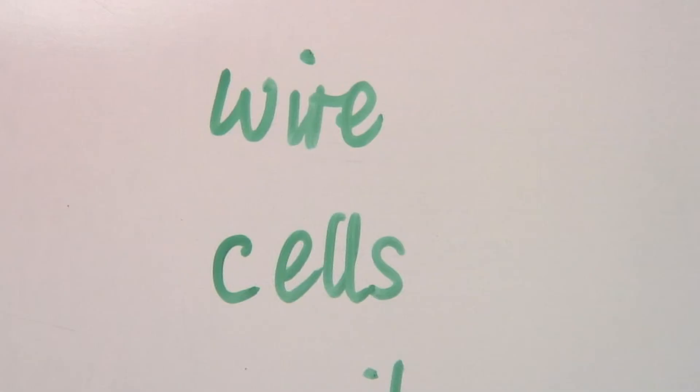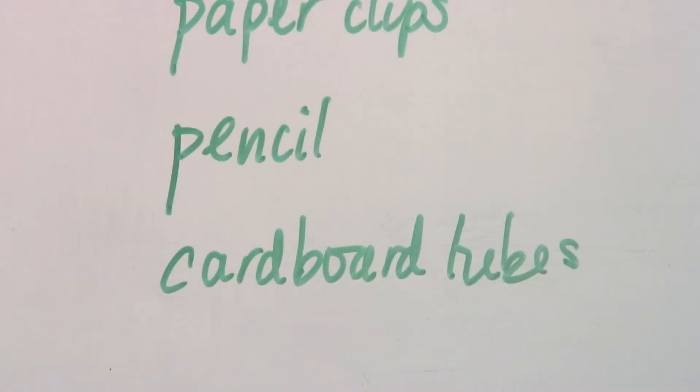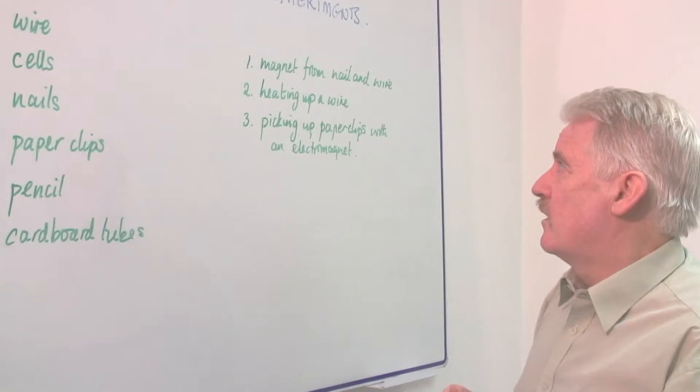Electric wire, there's often bits, ends of electric wire, cells out of batteries and so on. Nails, paper clips, pencils, cardboard tubes, they're all in your home.